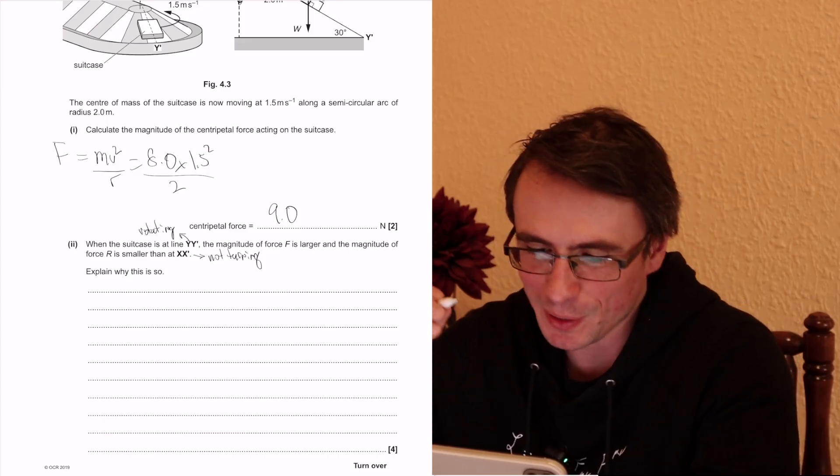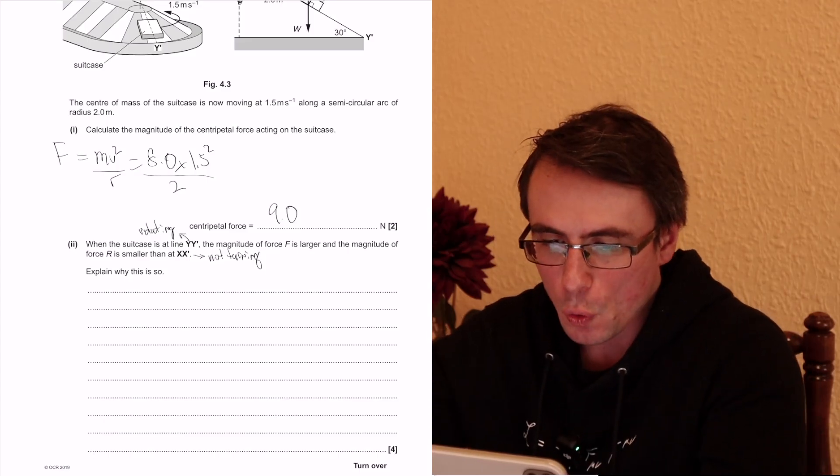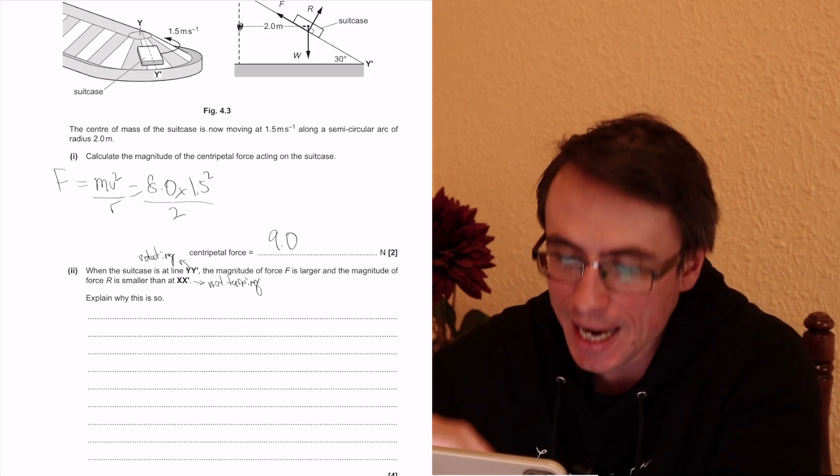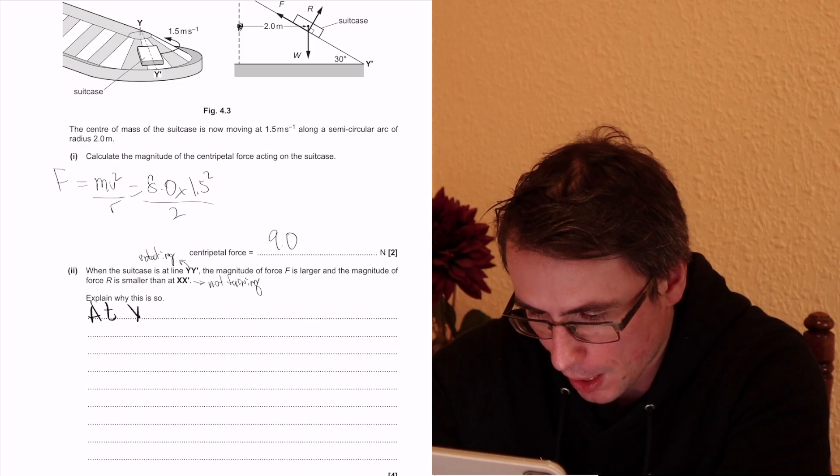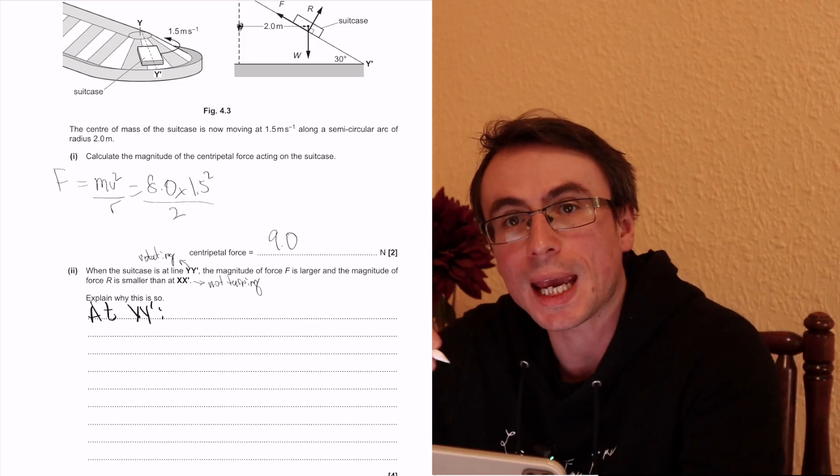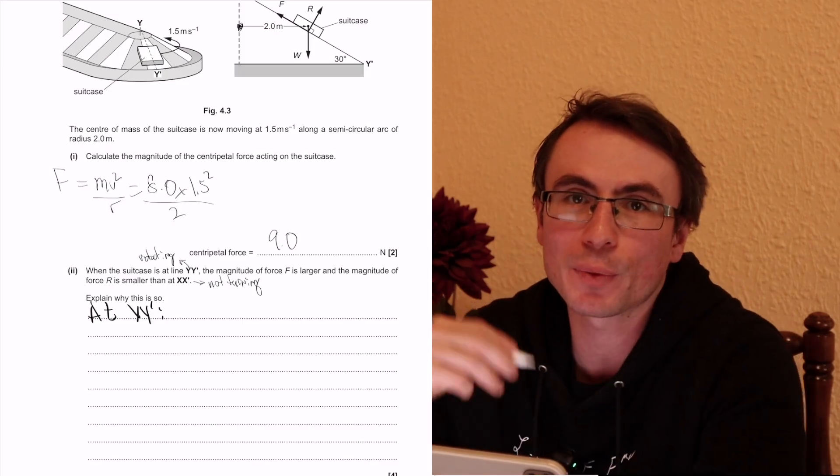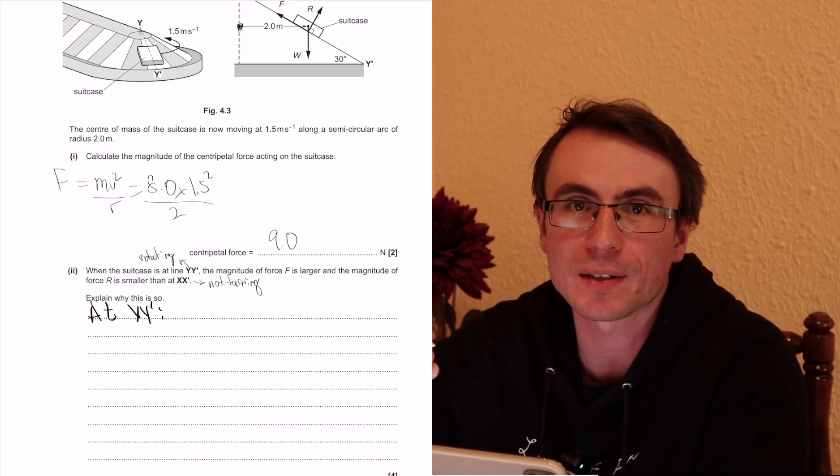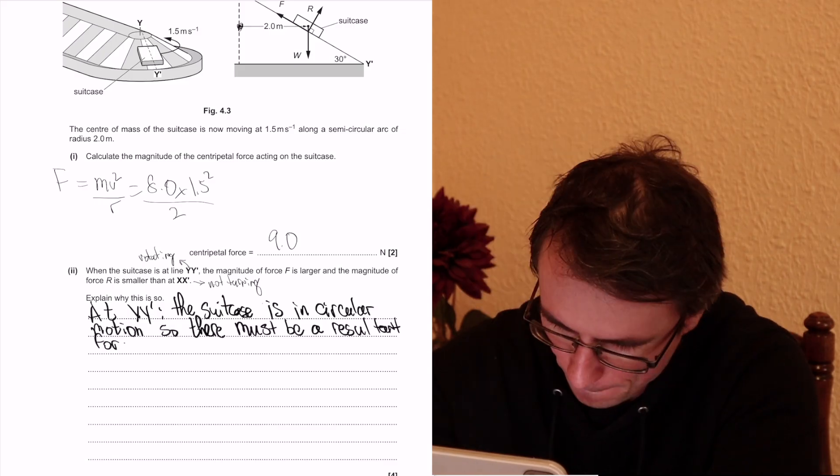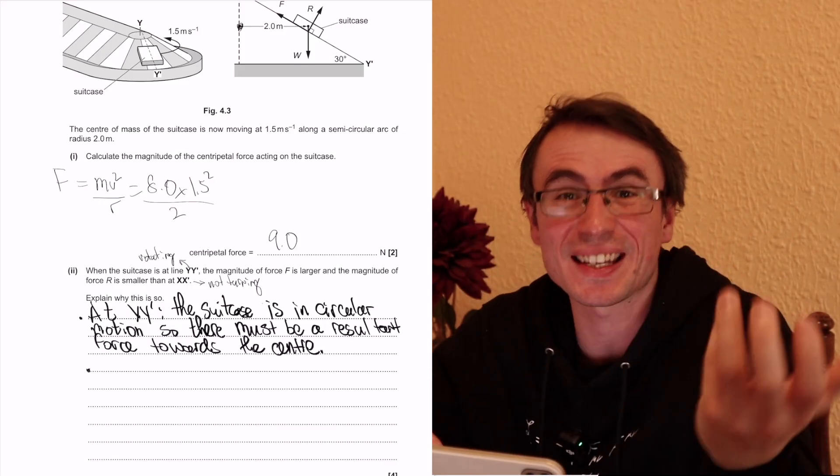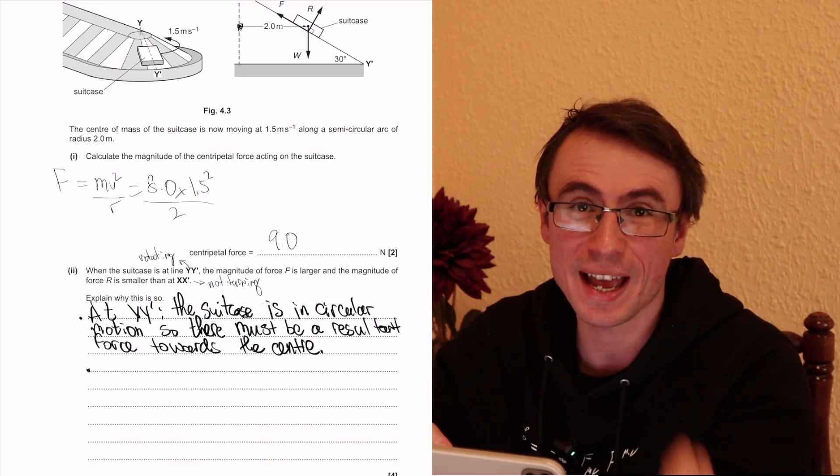Okay, let's try and put this into four marks. So at yy prime we can say that the suitcase must be turning and hence there must be a resultant force acting on it. The only force that has a component towards the center is F, so therefore F must increase.